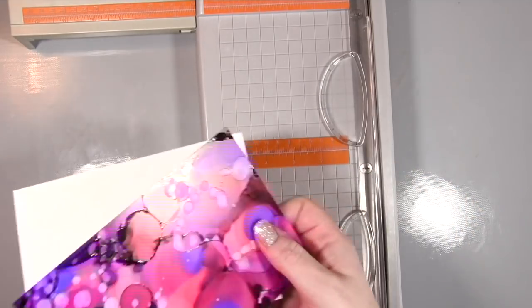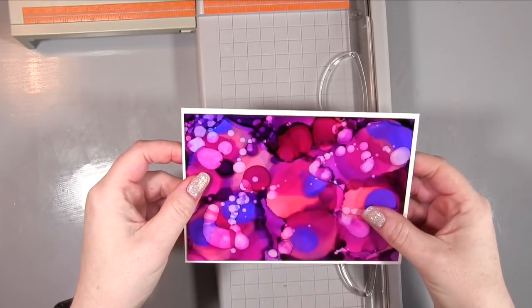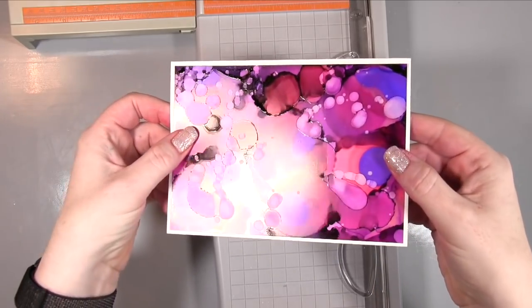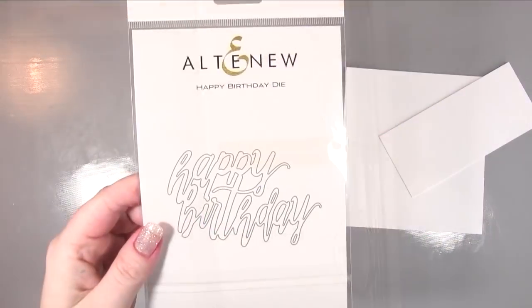Basically when we put it against our card it will give us an eighth of an inch around of white on all four sides. Don't cut it on all four sides unless you want that because otherwise you'll have too much of a gap.